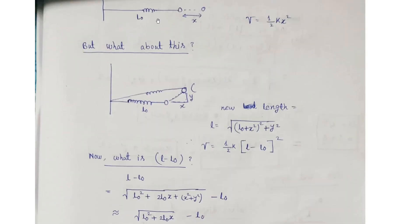As I mentioned earlier, first consider the simplest case. Here is a spring of length l₀, and you give mass m a displacement in the x direction — a small displacement x. The potential energy is simply ½k x². Now think about a different situation: here is a spring and you give it a displacement in both x and y directions — small lengths x and y. Then what will be the spring potential energy? We have to find the new length of the spring first. By Pythagoras' theorem, the new length is √((l₀ + x)² + y²).